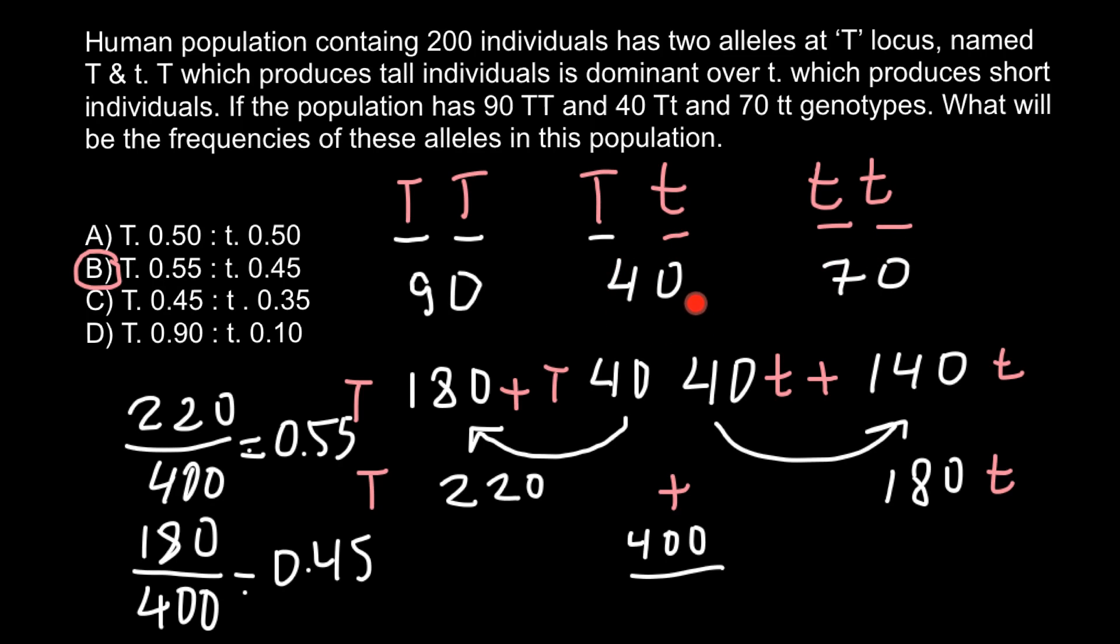Actually we just can divide this number by 2. So we can add 20 to this 90 and 20 we can add to this 70. So we are going to get the same frequency of alleles without doubling all the numbers. Because if we double this number, if we double this number, if we double this number, and if we double this number, numbers are going to be different but frequencies would be the same.